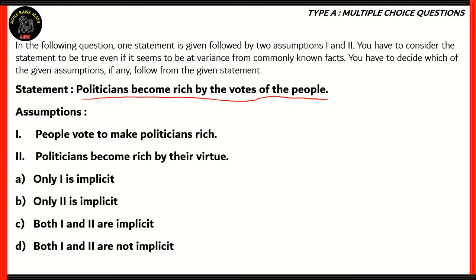We have two assumptions here. Assumption one: people vote to make politicians rich. Assumption two: politicians become rich by their virtue. The options are: only one is implicit, only two is implicit, both are implicit, both are not implicit. Now, if you look at both these assumptions, the first assumption — that people vote to make politicians rich — is not entirely a true statement.